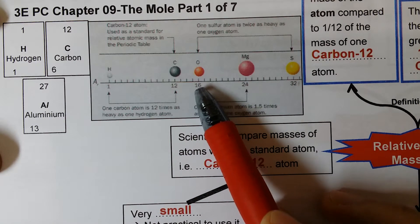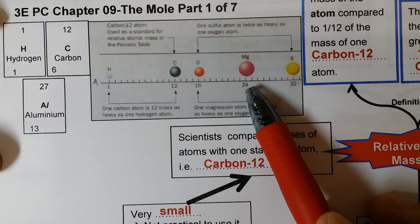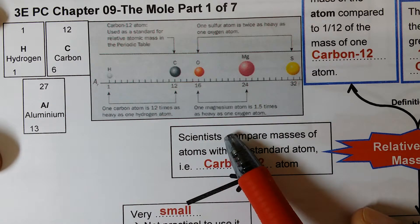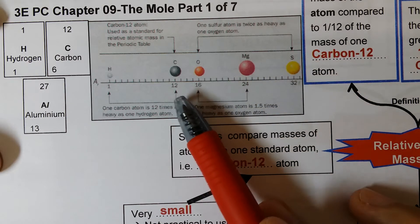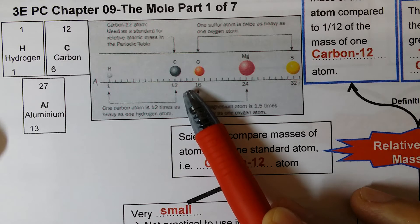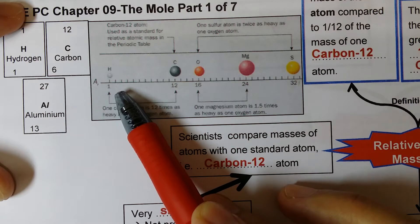So if you compare 1 oxygen atom with 1 over 12 the mass of a carbon-12 atom, that would be 16. If you compare the mass of a magnesium atom with 1 over 12 the mass of a carbon-12 atom, that would be 24 — instead of 24 over 12 or 16 over 12, which in a lot of cases is going to be a decimal number. So every time we compare, we use 1 over 12 of the mass of a carbon-12 atom, which essentially means we are comparing with the mass of a hydrogen atom.